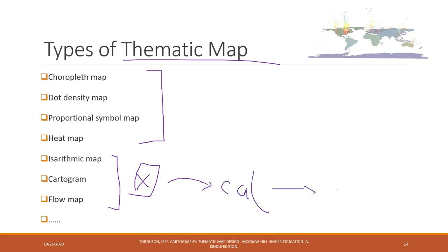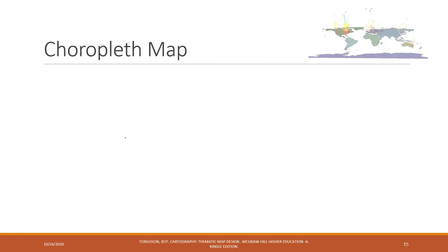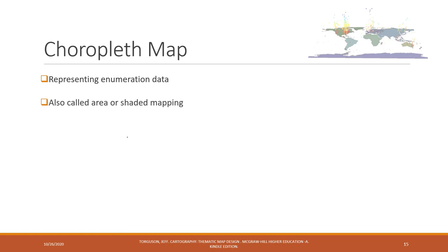By default, you can create those four types of maps directly. So first, the choropleth map. The choropleth map is used to represent enumeration data, and is also called area shaded mapping.